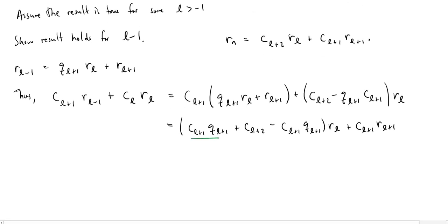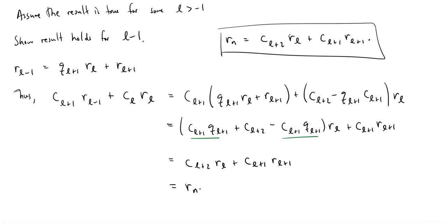But notice this first sum and this last sum are opposites of each other. So in fact, I end up with C L plus 2 times R sub L plus C L plus 1 times R L plus 1. And this is precisely what we knew by assuming that the result held for some L. And so this is equal to R sub N. And so in this inductive proof here, we're able to show that this is going to hold for all of these L's all the way down to negative 1. So assuming L is greater than negative 1 means it could be as small as 0. And when it does equal 0, we see the result will hold for negative 1.